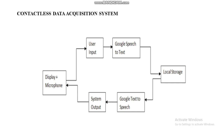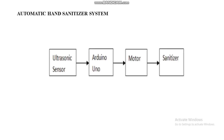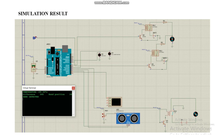Those conversations are displayed on the display. For the automatic hand sanitizer system, the ultrasonic sensor activates through Arduino whenever it detects a hand present or not. This is shown in a simulation result where Arduino is enabled along with the ultrasonic sensor and temperature sensor — here LM35 is used in this simulation.